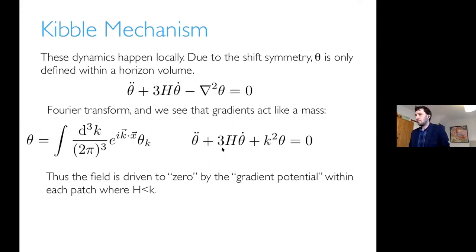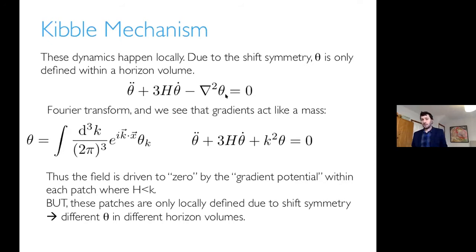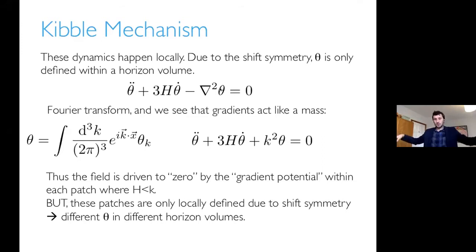The mode functions are driven to zero by the gradient potential within each patch where the wave vector k is larger than Hubble. However, the value of theta within each patch is not defined because the equation in real space contains only gradients acting on theta — theta is invariant under a shift. Any shift of theta by a constant is killed by both the dot and grad operators. So within each patch theta goes to some value, but you can't compare it between patches. That's why it takes on a uniform distribution overall — the patches can't talk to each other.